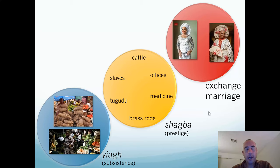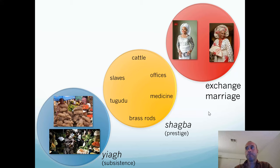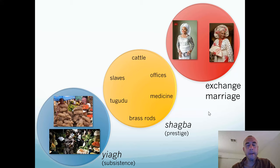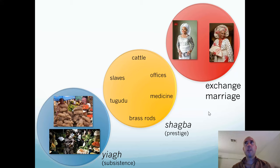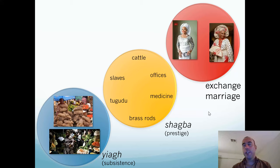Then you have shagba, which is the prestige sphere. These are goods that not everybody gets their hands on — goods that convey social wealth and prestige upon an individual. Within this sphere you had cattle, certain ritual offices and appointments that carried a lot of prestige, certain types of medicine, herbal interventions, and curing ceremonies.